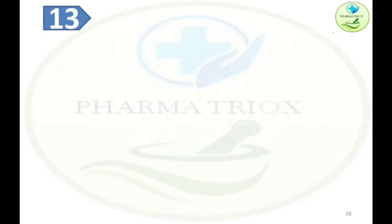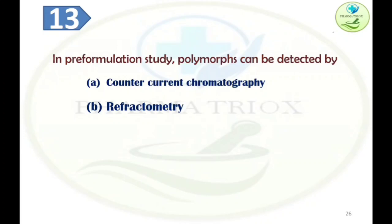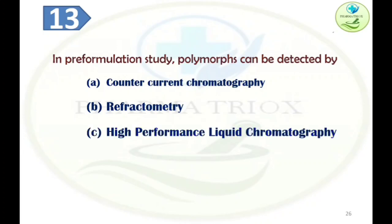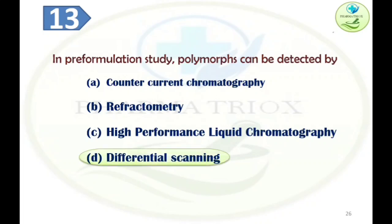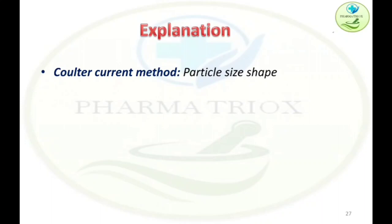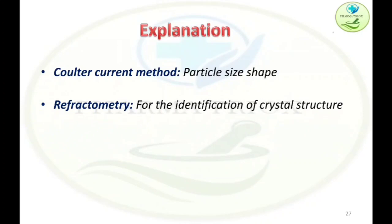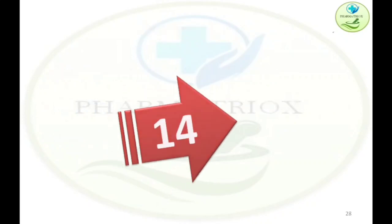Question thirteen: In pre-formulation studies, polymorphs can be detected by — Option A: counter-current chromatography, Option B: refractometry, Option C: HPLC (high-performance liquid chromatography), Option D: differential scanning calorimetry. The correct answer is Option D — differential scanning calorimetry. Counter-current chromatography is used for particle size and shape determination. Refractometry is used for identification of crystal structure. HPLC is used to ensure purity and determine concentration of the formulation.